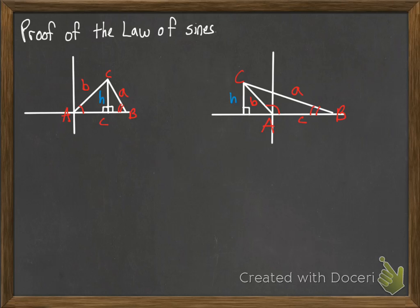Also labeling the sides A, B, and C. In each case I've dropped the altitude from point C down to the X axis. And I'll label that with a little blue H.